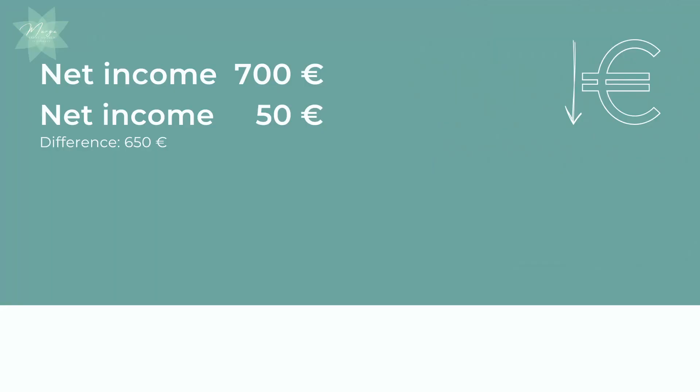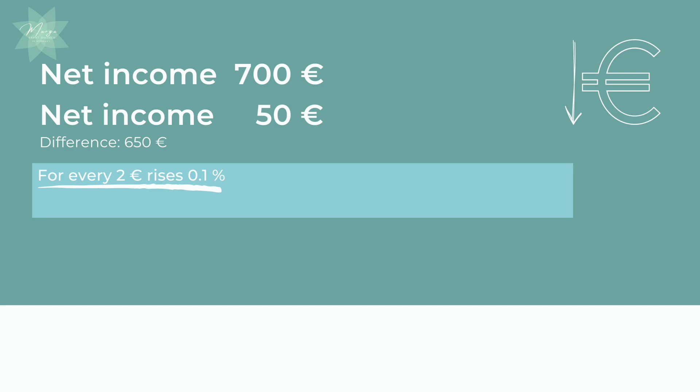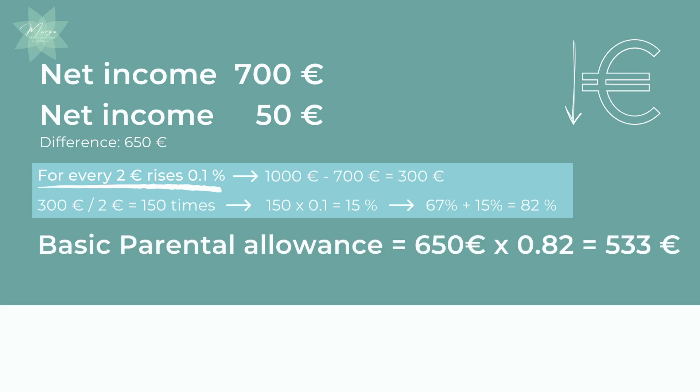Let me give you an example of how the calculation works for low-income earners for Elterngeld in Germany. The mother or father was receiving 700 euros before the child was born and is now receiving 50 euros, so the difference is 650 euros. For every 2 euros that the income falls below 1,000, the percentage rises by 0.1%. In this case, we multiply 150 by 0.1%, which corresponds to 15%. This parent had the right to receive 67% plus 15%, which is 82%. And 82% of the income difference of 650 euros is 533 euros.